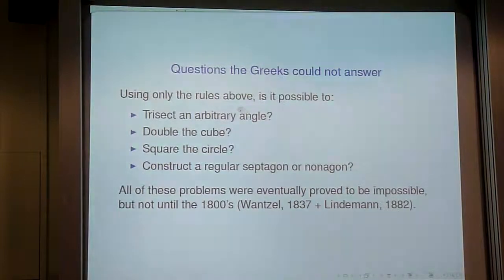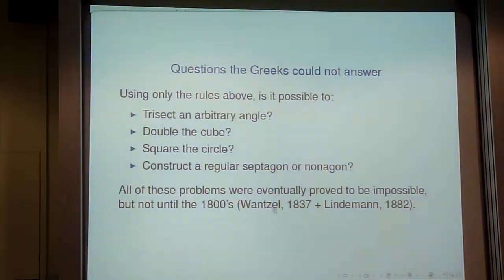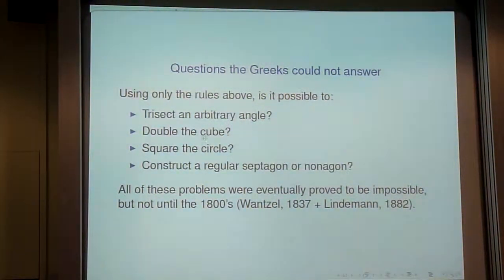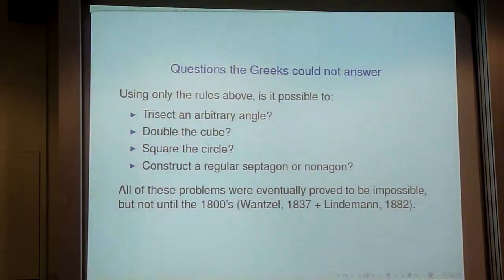The amazing thing is that the Greeks couldn't prove these were impossible — they found workarounds, like using a ruler instead of a straight edge. It wasn't proven impossible until the 1800s. Wantzel proved that trisecting the angle, doubling the cube, and constructing the septagon/nonagon are all impossible. Squaring the circle was handled by Lindemann's theorem in 1882. Wantzel's proof crucially uses field theory, developed largely by Évariste Galois.